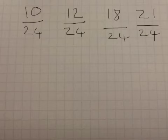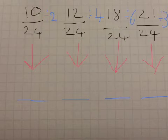Now, we are going to divide them back to their original fraction. Now, we are going to do the dividing part. 10 divided by 2 is 5. 24 divided by 2 is 12. 12 divided by 4 is 3. 24 divided by 4 is 6. 18 divided by 6 is 3.